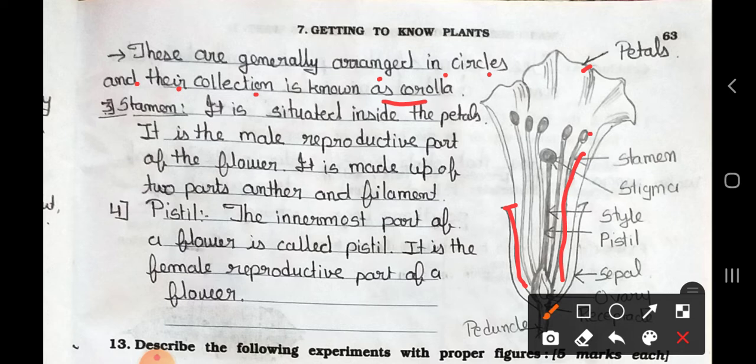In the petals, it is situated. It is the male reproductive part. It is the male reproductive part of the flower. It is made up of two parts. Anther, this one. Anther and filament.